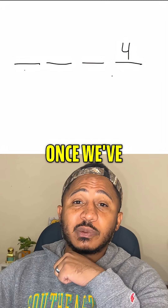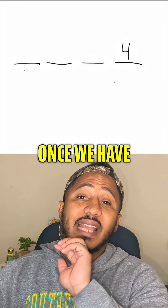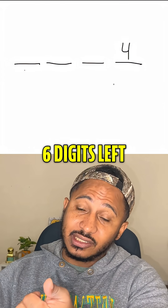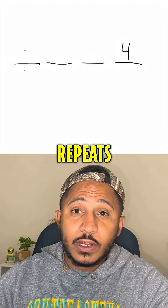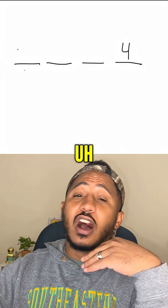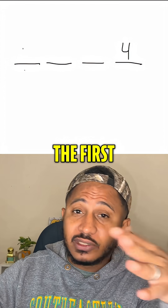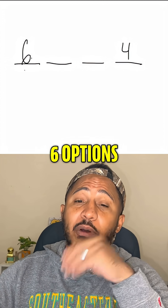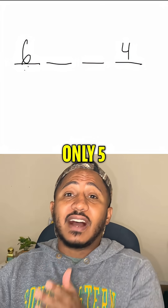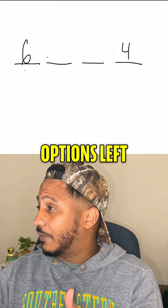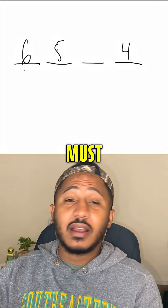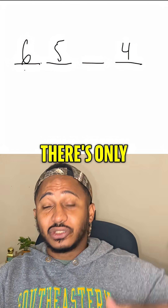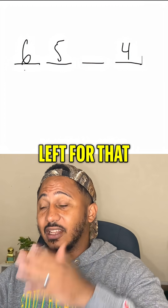Once we've chosen the last digit, we only have six digits left. With no repeats, if we choose one of those six for the first digit, there are six options. Once we choose that, there are only five options left for the second digit, and then four options for the third digit.